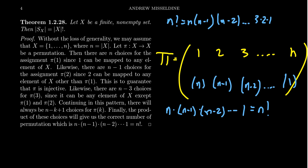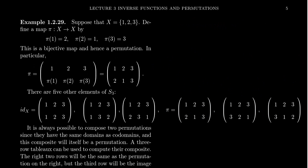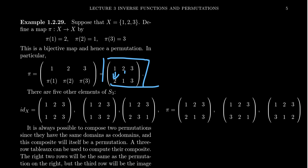A very nice counting argument gives us that the size of the permutation set equals the factorial of the cardinality. As a specific example, suppose we have the set {1, 2, 3}, so we're looking at S3. One example of a permutation sends 1→2, 2→1, and 3→3. In tableau form, the top row is 1, 2, 3 and the bottom row is 2, 1, 3.